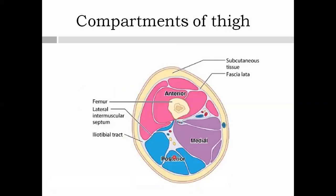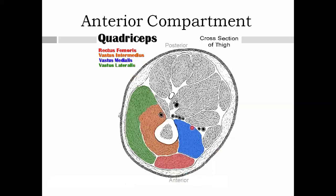Now the compartments of the thigh: the fascia lata gives three septa resulting in three compartments. These are the anterior compartment (also called the extensor compartment), the posterior compartment (also called the flexor compartment), and the medial compartment (also called the adductor compartment). We are going to focus mainly on the anterior compartment.